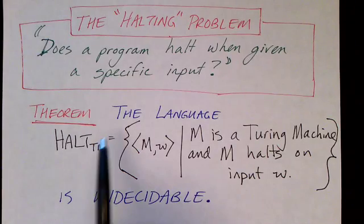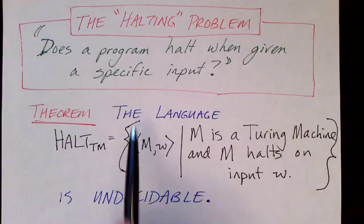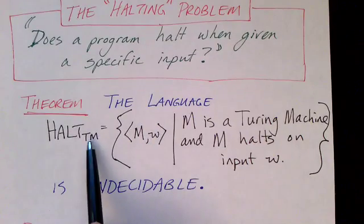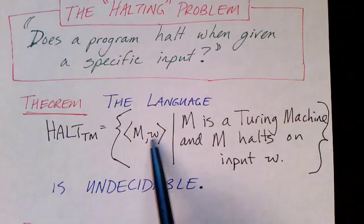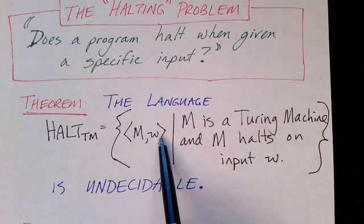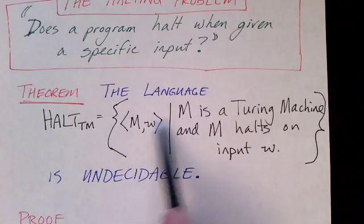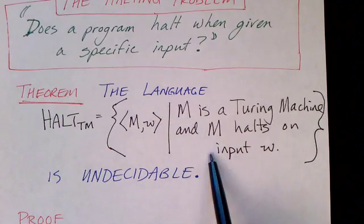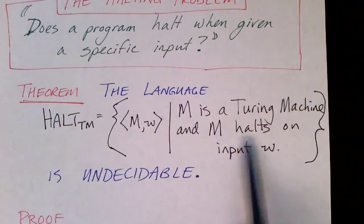We can express this problem as a language. We express all problems as languages, and the language we'll call HALT_TM consists of descriptions of pairs: the first is a description of a Turing machine, and the second is some potential input to that Turing machine. A given string is part of the language if M is a Turing machine, W is a string, and when M is run on W, the Turing machine M would halt on input W.